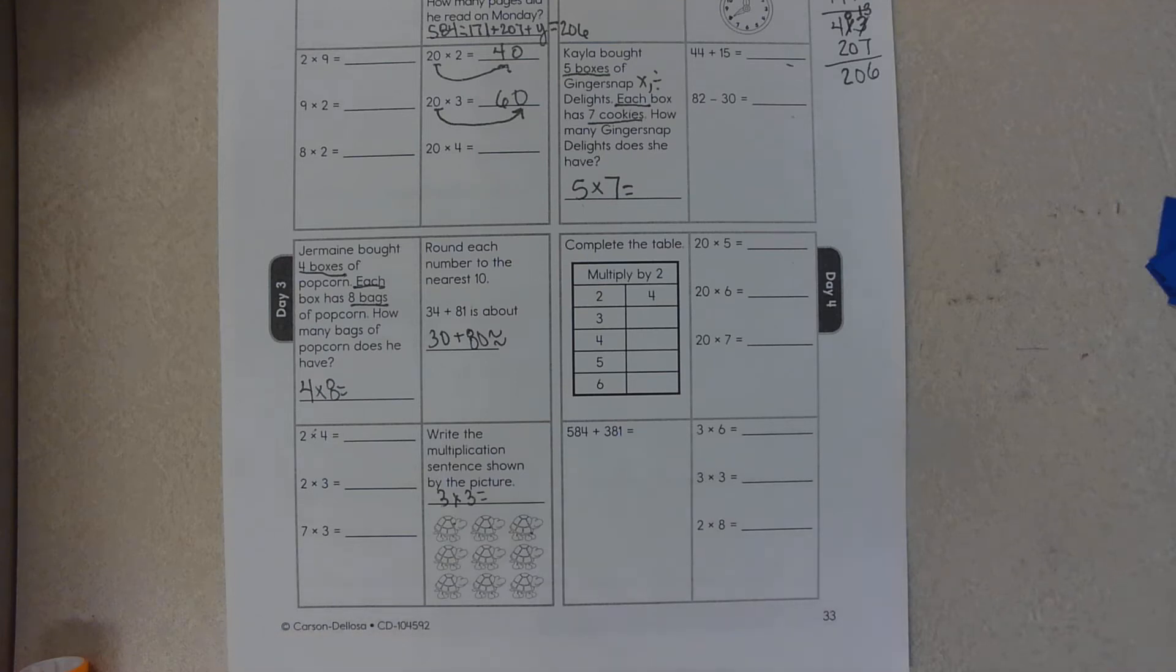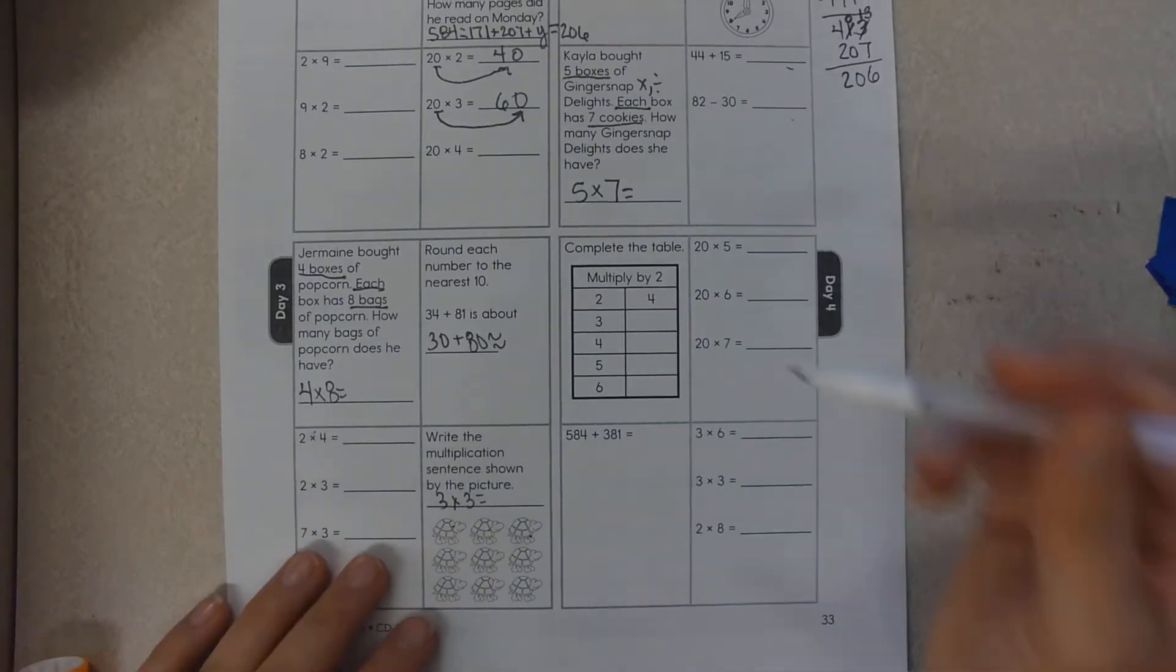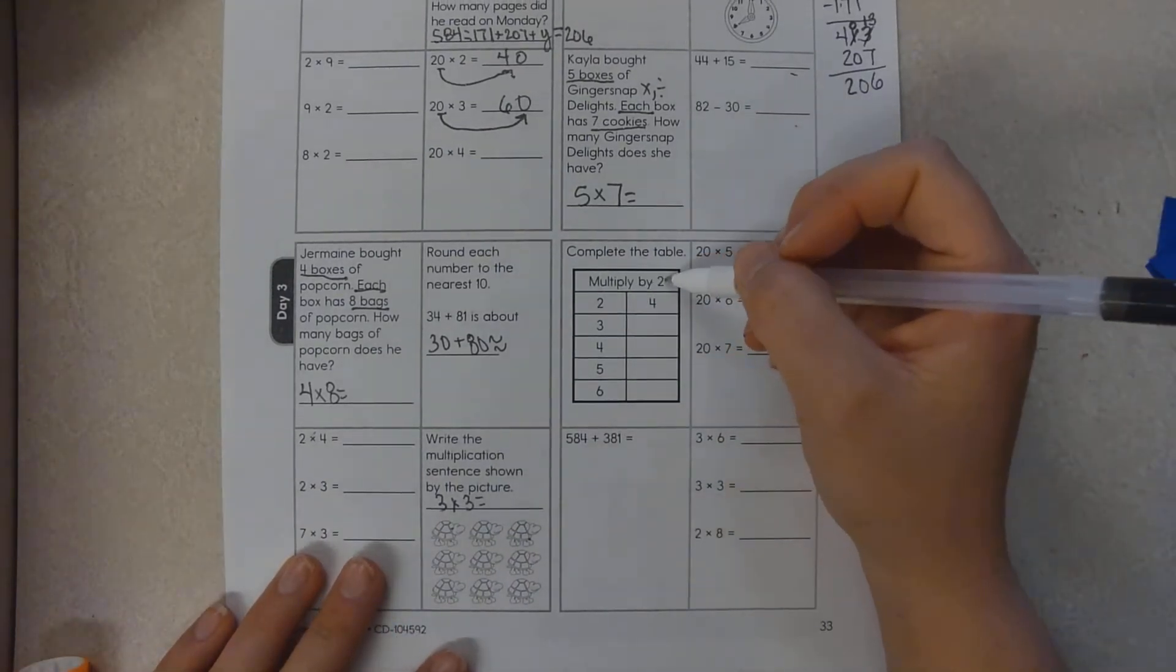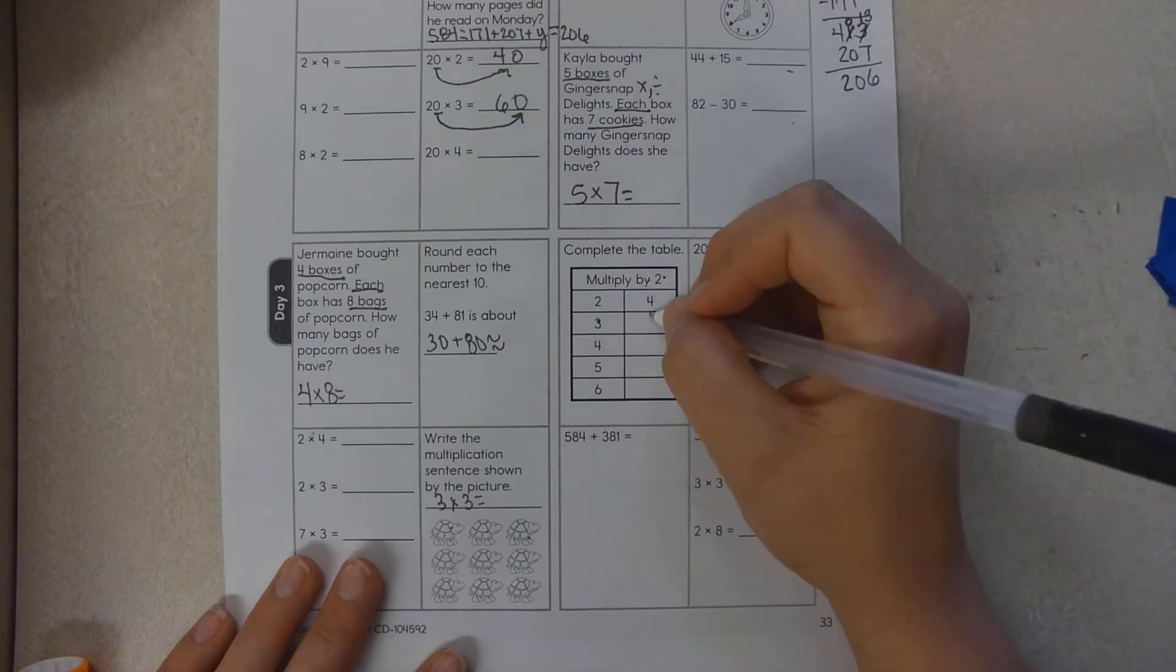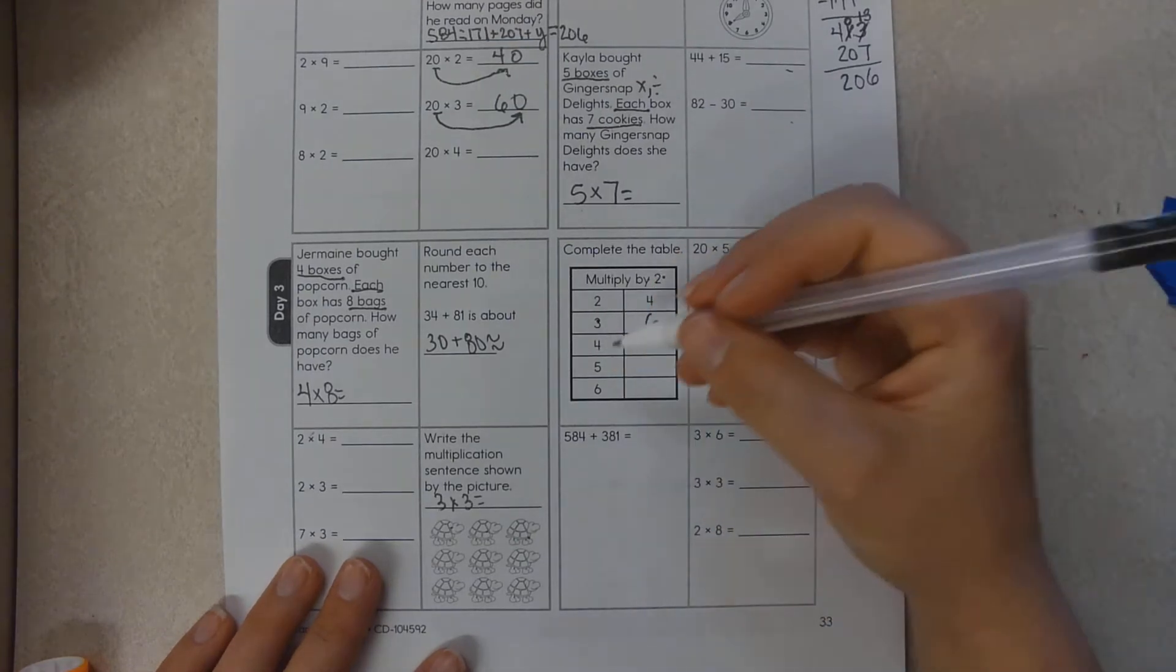Hello boys and girls, we are on day four of week 13 of math. For today you want to complete the table and you are multiplying by two. So what is three times two? It's six. What is four times two?